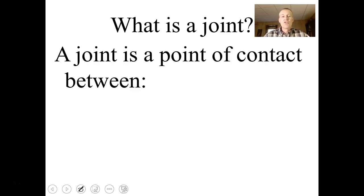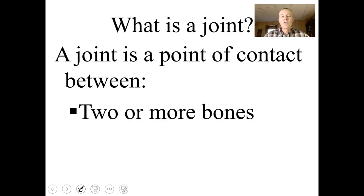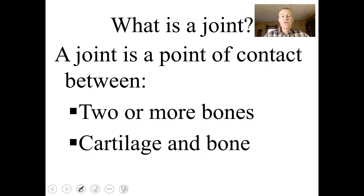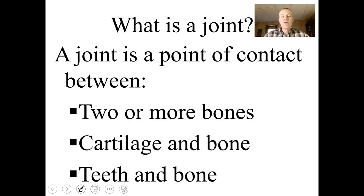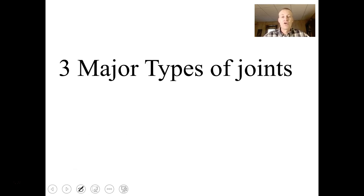A joint is a point of contact between two or more bones, cartilage and bone, or teeth and bone. I want to talk about three major kinds of joints. I'm not going to talk about the subdivisions of these three types — if you go into physical therapy you'll learn a lot more about the subdivisions, but I don't have time to spend a lot of time on joints without losing time on the nervous system.